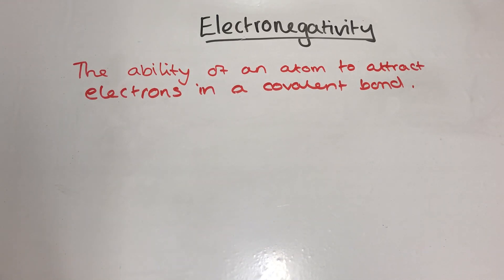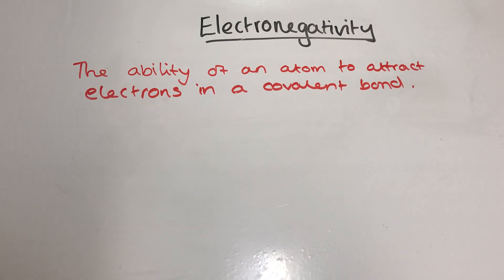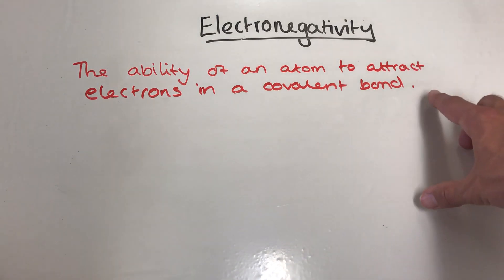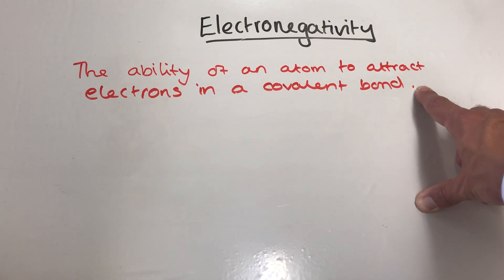Welcome back to another video on A-level chemistry. Here we're looking at the property of electronegativity. What you will be expected to do is explain or define the term electronegativity and then give an explanation for its reasons. So first of all, here is our definition: the ability of an atom to attract electrons in a covalent bond.